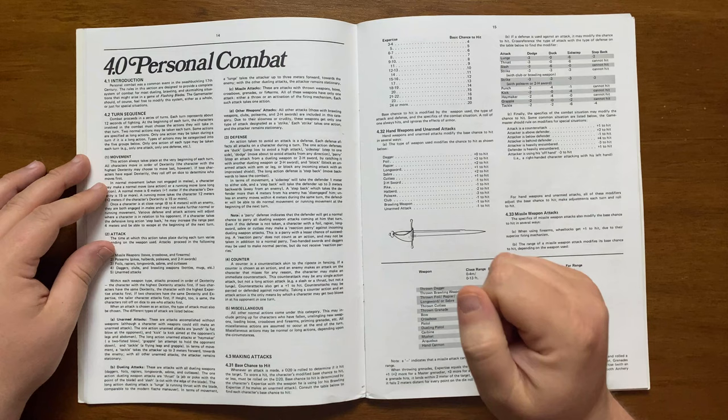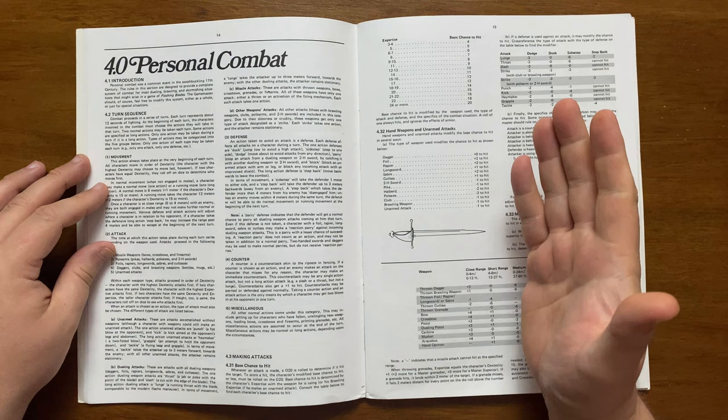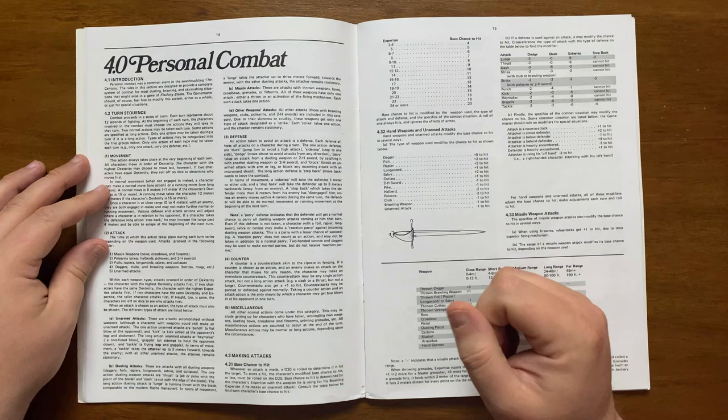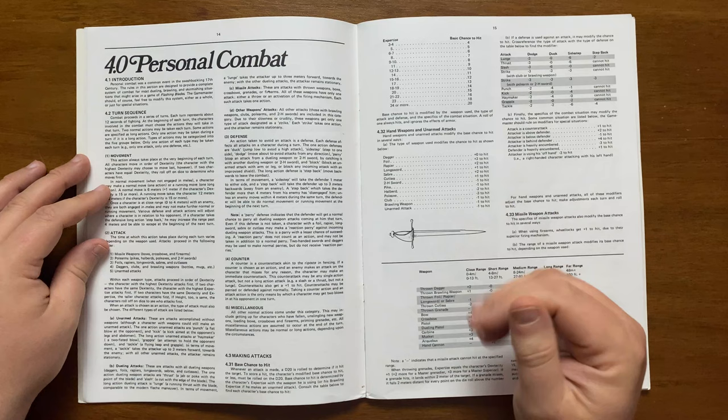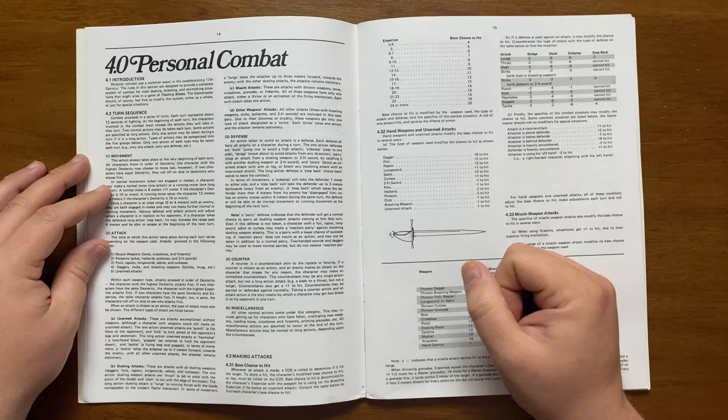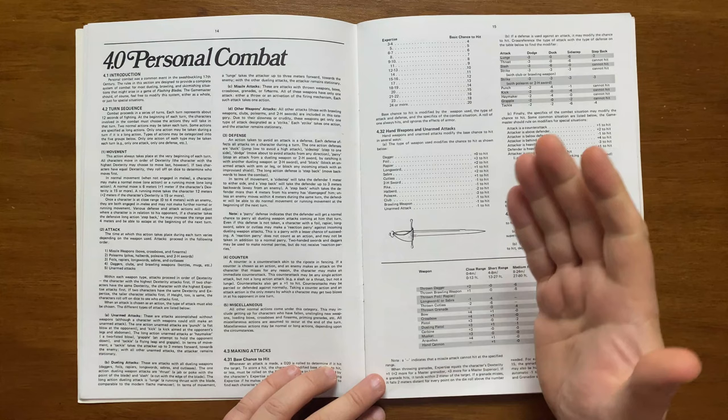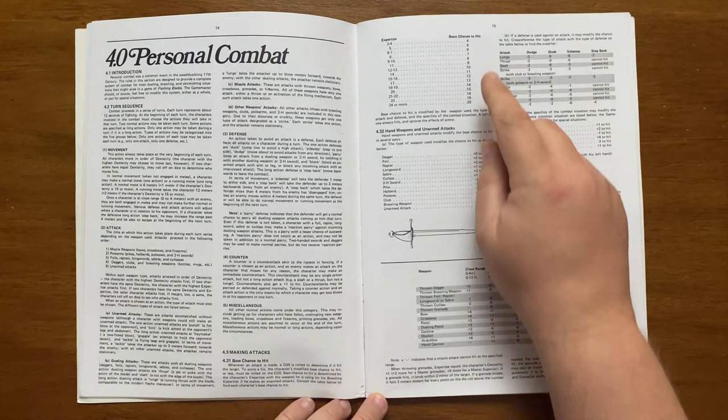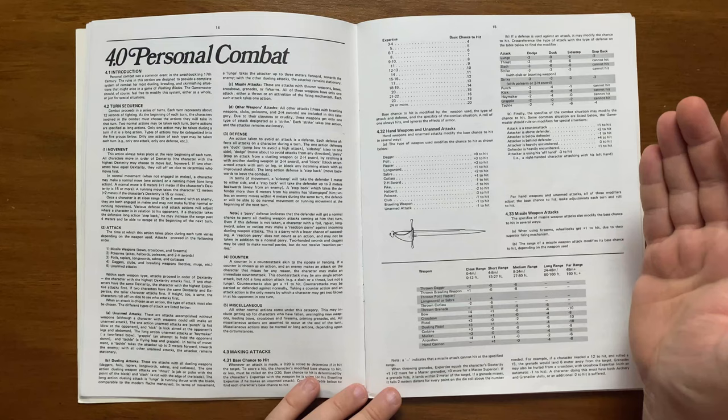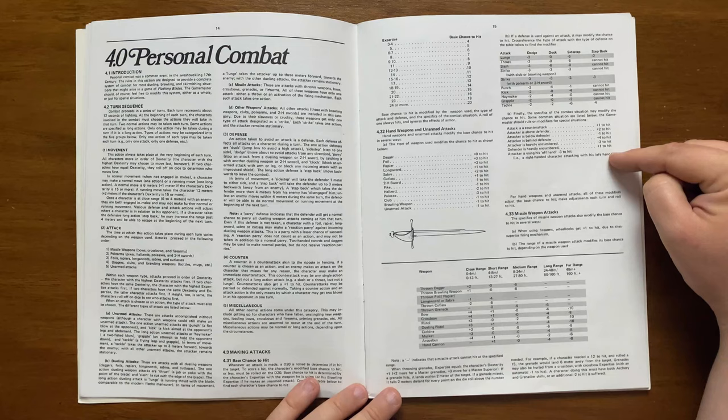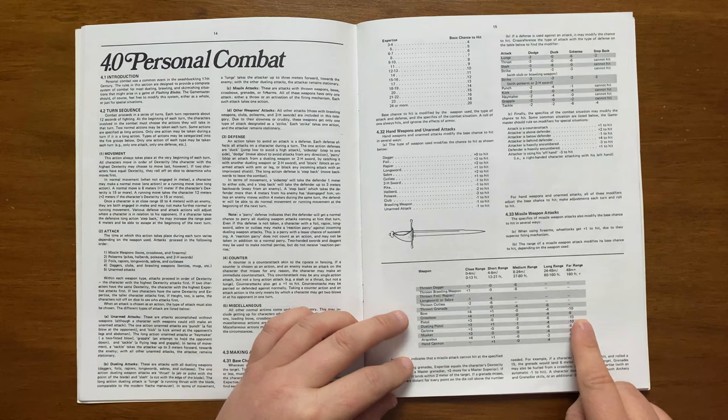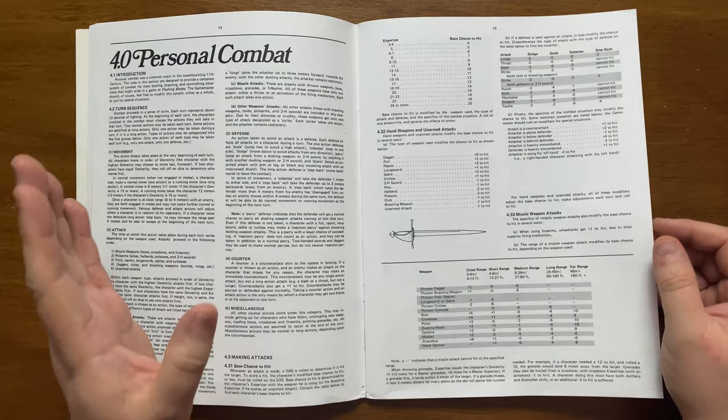Unarmed attacks are either punch or kick or a long action called grapple and tackle. Dueling attacks are either thrust, slash and lunge. Two handed weapons have only one type of attack: strike. Attacks can be defended against each round. The defence is a duck, sidestep, dodge and block. There is also the long action called step back. Sidestepping moves the character one metre, and step back moves them at least four. Moving more than four metres disengages them from the fight. There is also the counter attack or riposte. If a character is attacked and missed, they can choose to riposte, which means they immediately get an attack back with a plus one to hit. Similarly, there are a number of bonuses and penalties.